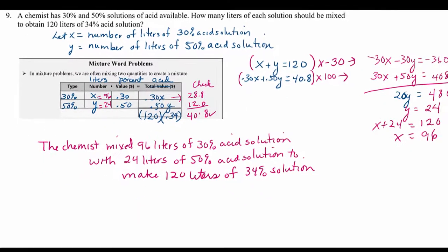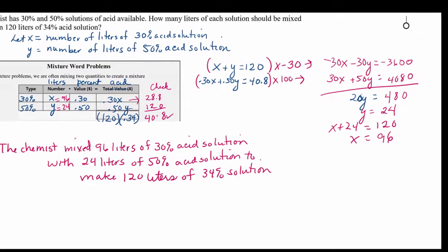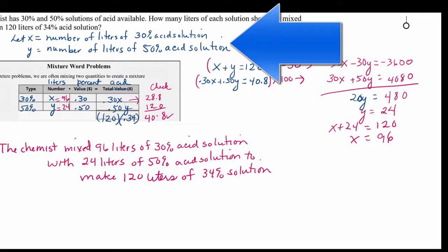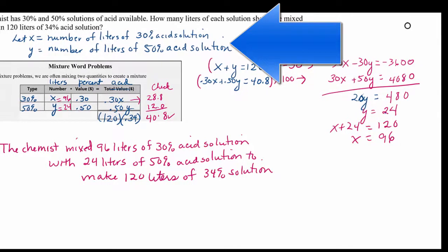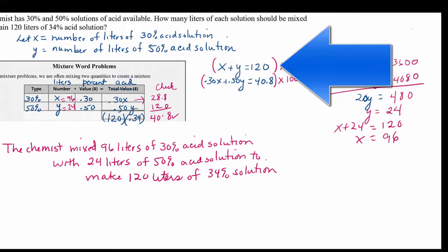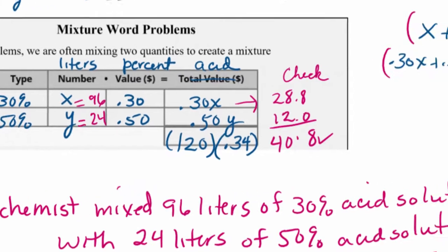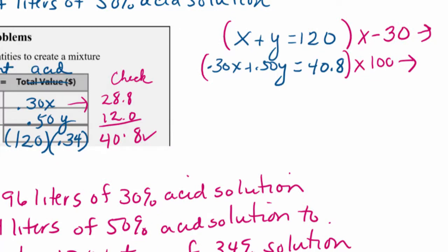Here's my solution. I defined x to be the number of liters of the 30% solution and y to be the number of liters of the 50% solution. My first equation was x plus y equals 120. Using the table, the second equation was 0.30x plus 0.50y equals 40.8.